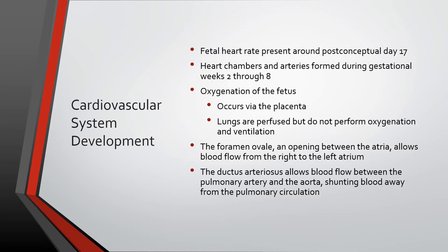When we look at circulatory changes from gestation to birth, the fetal heart rate is present around post-conceptual day 17. The four chambers of the heart and arteries are formed during gestational weeks two through eight. During fetal development, oxygenation of the fetus occurs in the placenta. The lungs are perfused but do not perform oxygenation and ventilation. The foramen ovale is the opening between the atria, which allows blood flow from the right to the left atrium. The ductus arteriosus allows blood flow between the pulmonary artery and the aorta, shunting blood away from the pulmonary circulation.